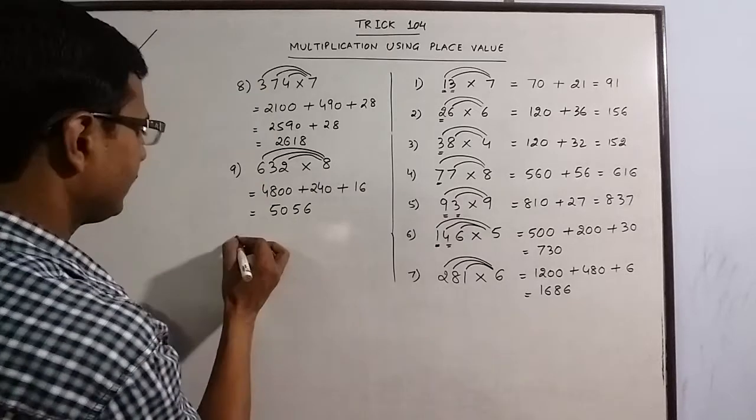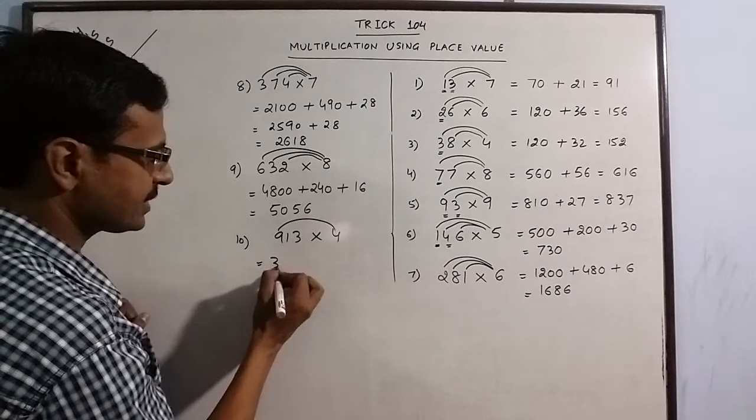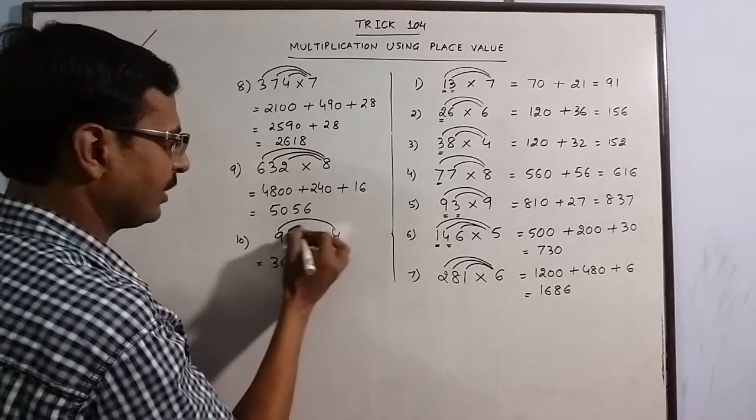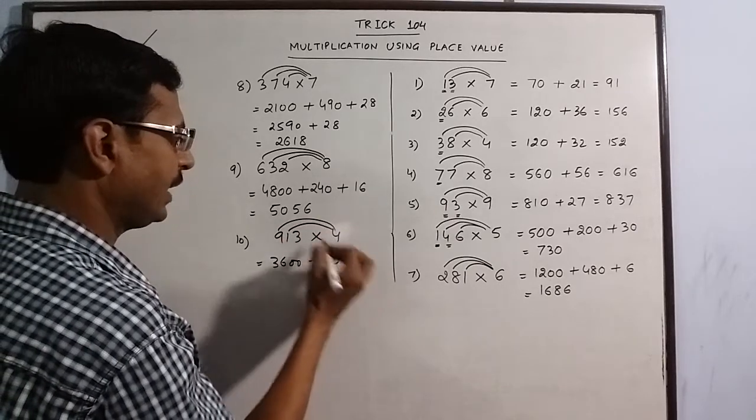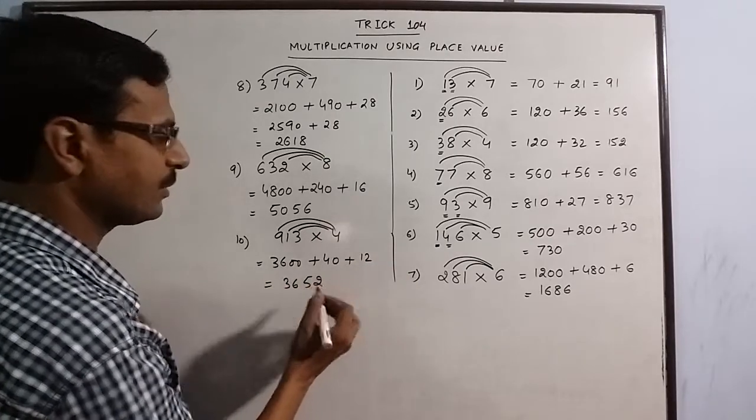One more example. Say you have 913 multiplied by 4. This is 9 4's are 36, 1 4's are 4, and 3 4's are 12. So 3652 is the product.